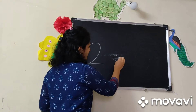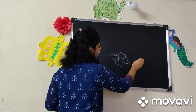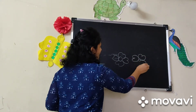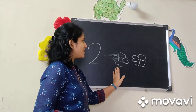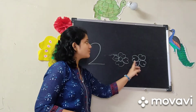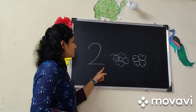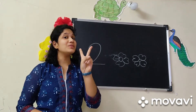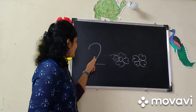See here. These are flowers. How many flowers are here? Count it. 1, 2. 2 flowers. And this is number 2.